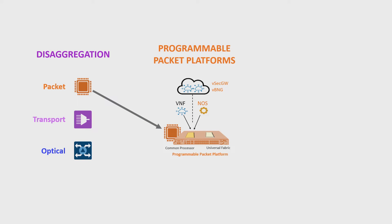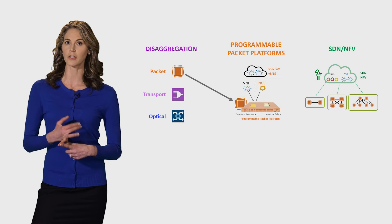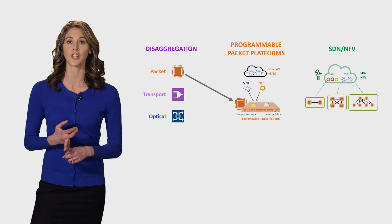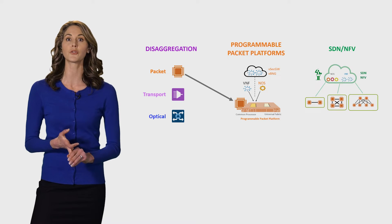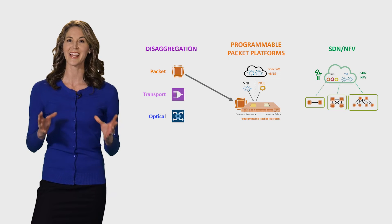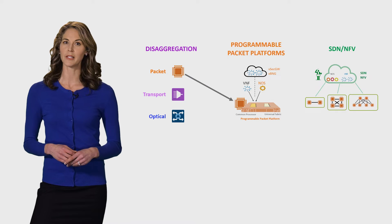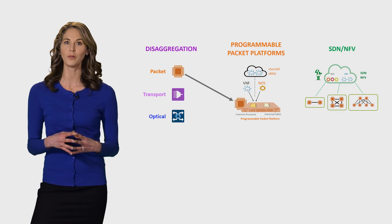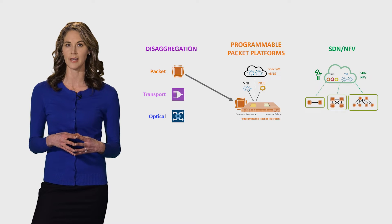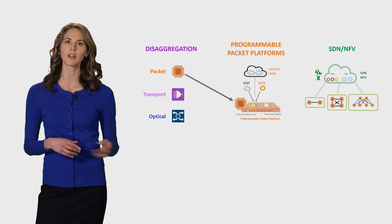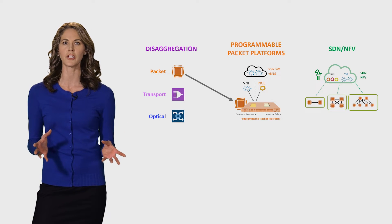The third component is software-defined networking and network function virtualization. This element leverages industry-standard open interfaces and consists of a number of functions including multi-domain service activation, service chaining, virtual fabric controllers for horizontal scalability, and NFV management and organization, or MANO. These software elements are essentially the glue that holds together highly disaggregated networking solutions and resolves perceived complexity and operational issues of the model.